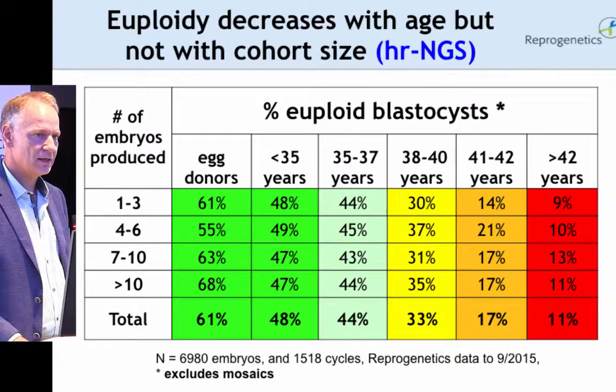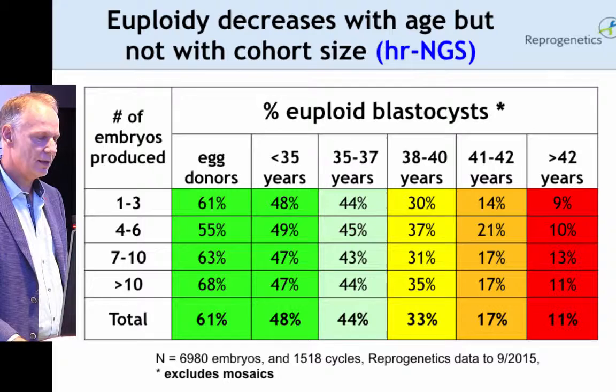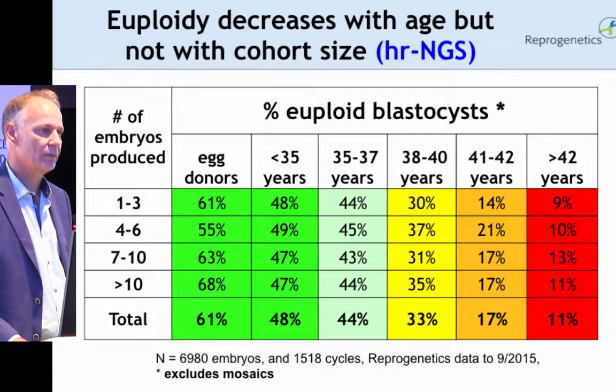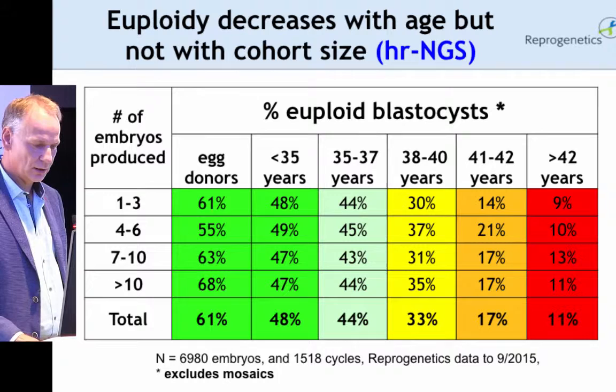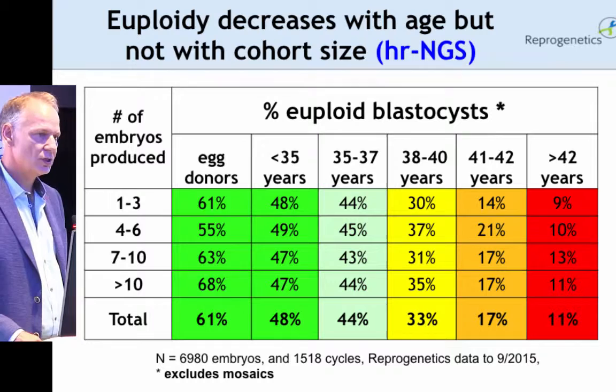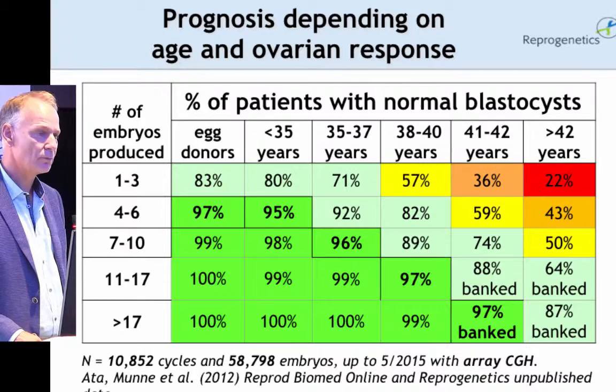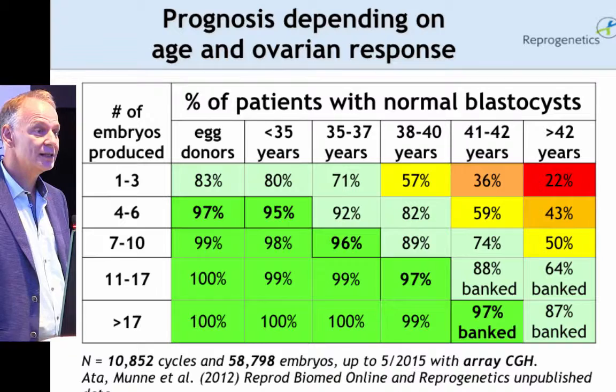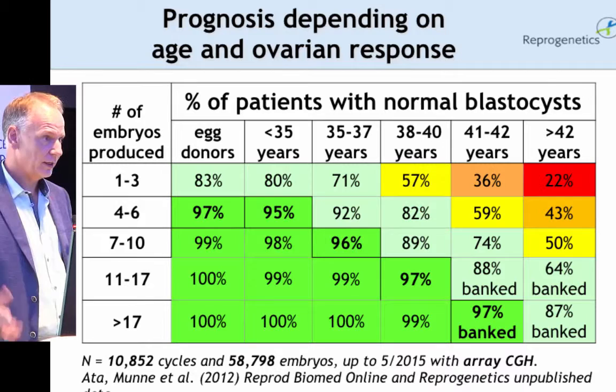We found exactly the same thing with next-generation sequencing. There are a few fewer euploid embryos because now some of them are being classified as mosaic. That's why, if you compare back to aCGH, there is a small decrease in the number of euploid embryos — those are now classified as mosaic. Again, we don't see a relationship between number of embryos and chromosome abnormalities, and this is important to counsel patients on what's the chance of finding at least one normal embryo.